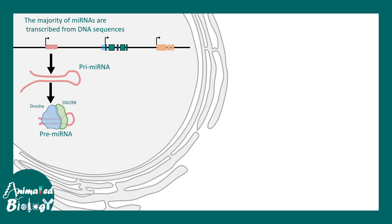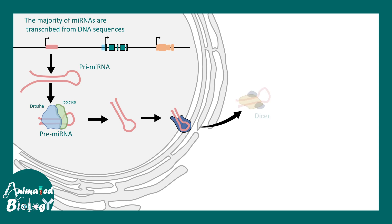These primary micro-RNA transcripts get further processed with the help of enzymes known as DROSHA and DGCR8 (or PASHA), producing the pre-micro-RNA transcript. This pre-micro-RNA transcript is then moved out of the nucleus with the help of the Exportin-5 complex.